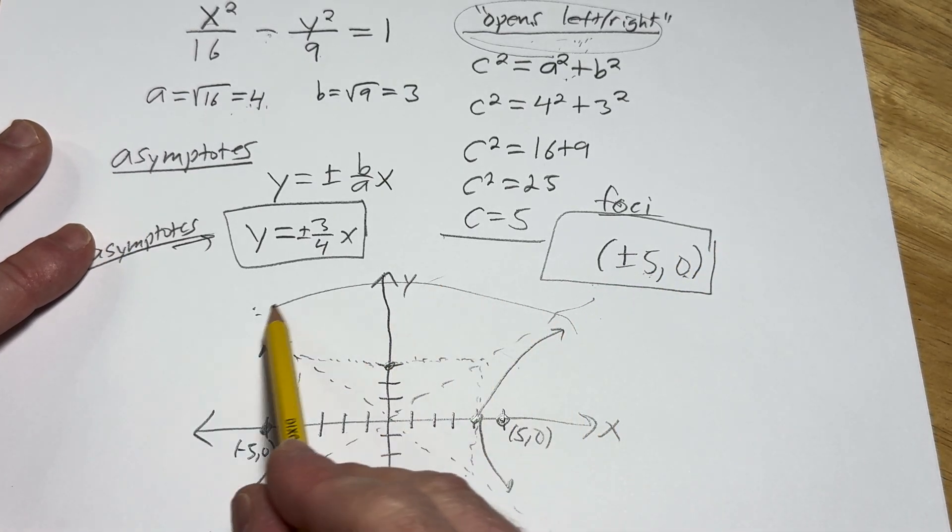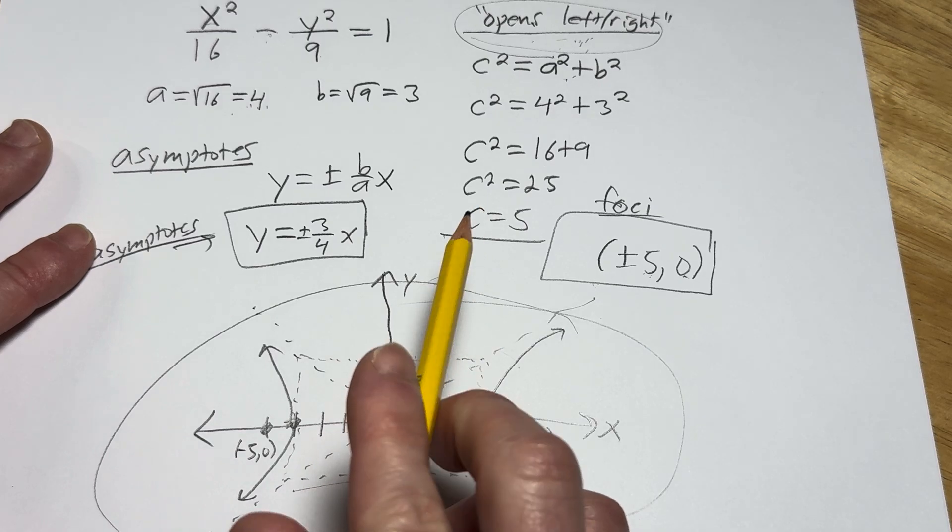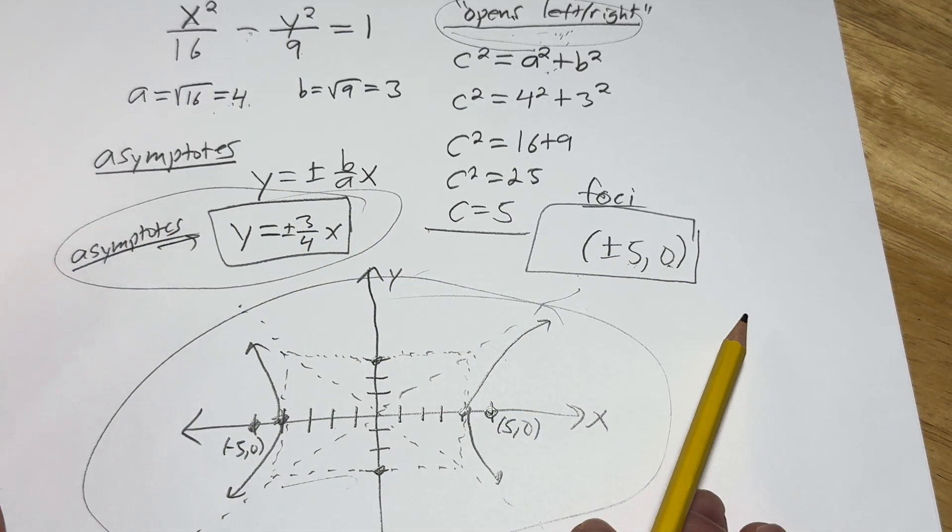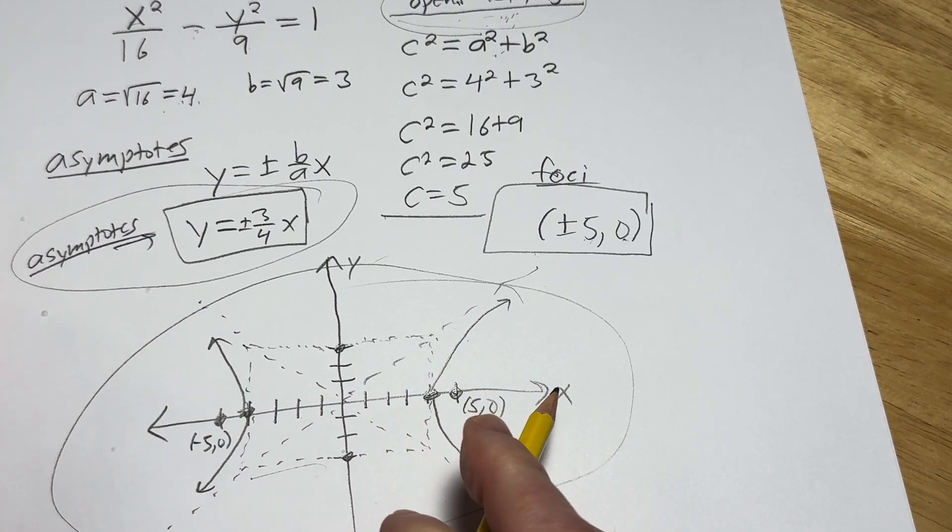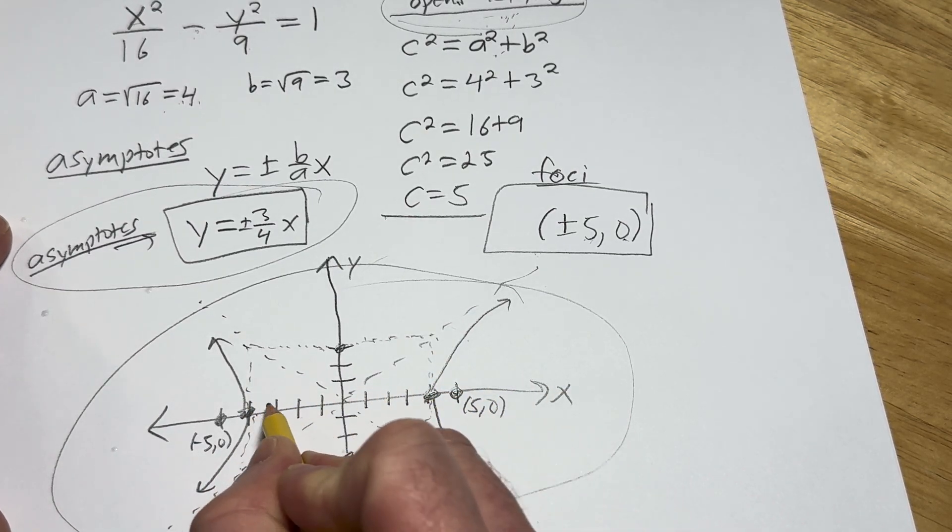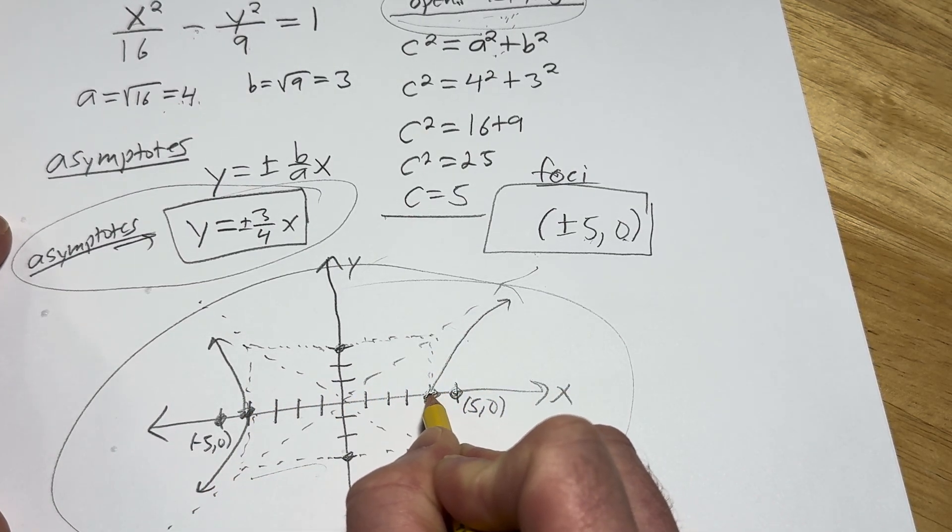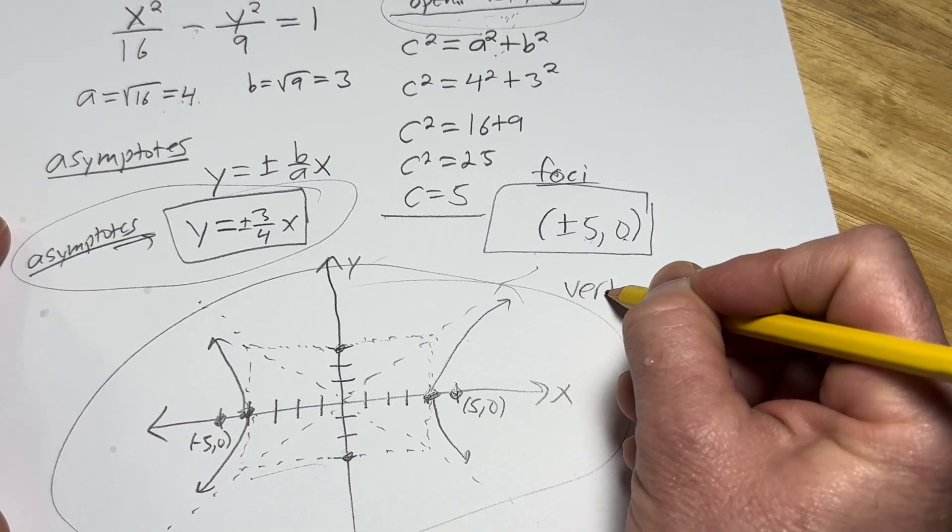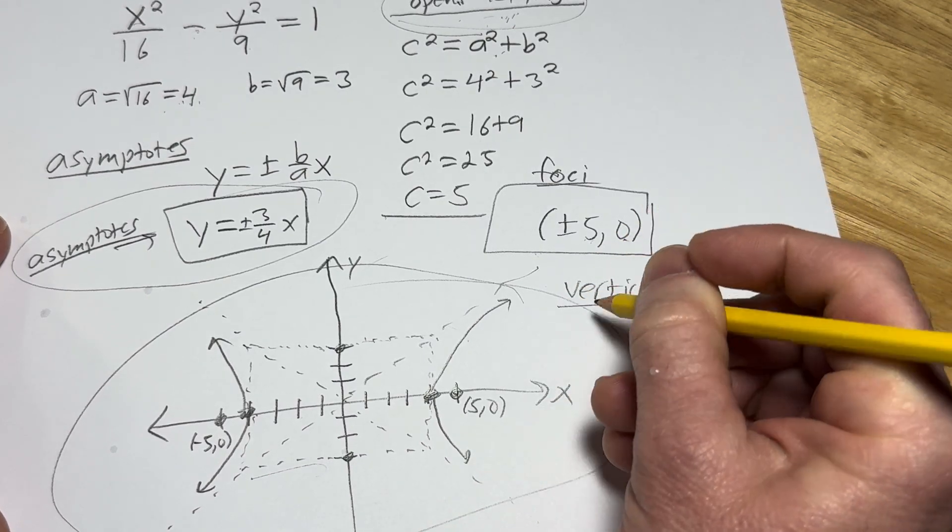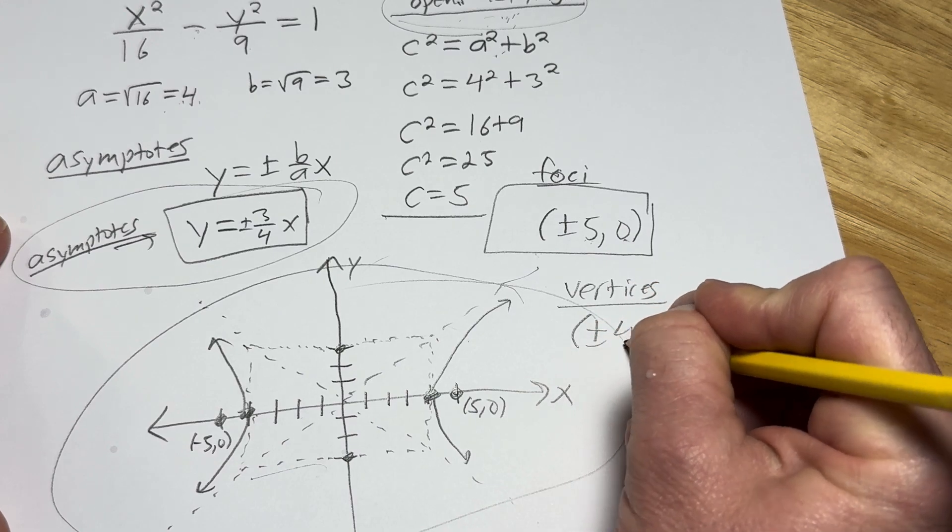And I believe that's it. We've got the graph, right? We've got the asymptotes. Oh, we're missing the vertices. So what are those? Those are actually on the hyperbola, right? So the vertices are here. So it'll be 4,0 and negative 4,0. So the vertices are going to be plus or minus 4,0.